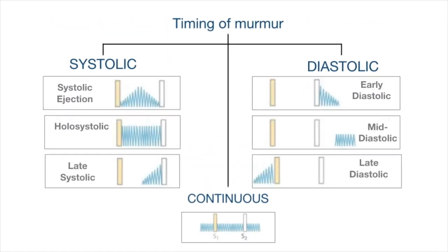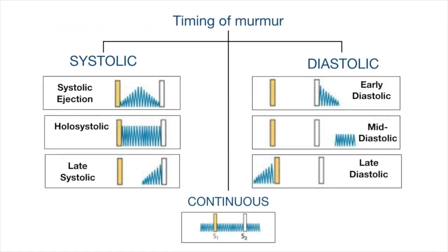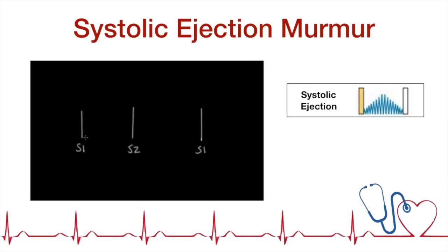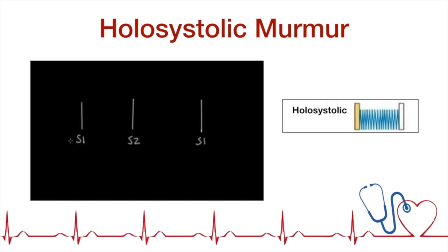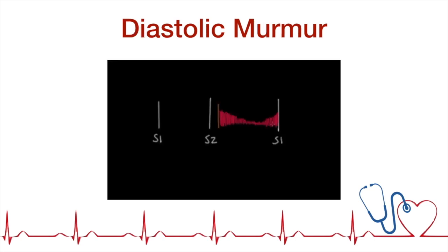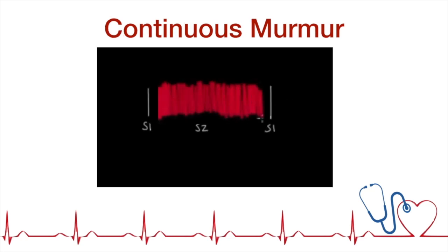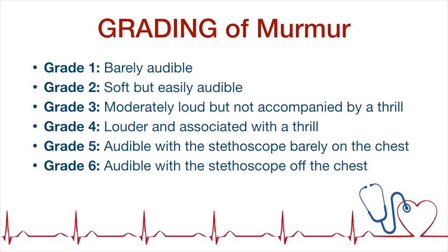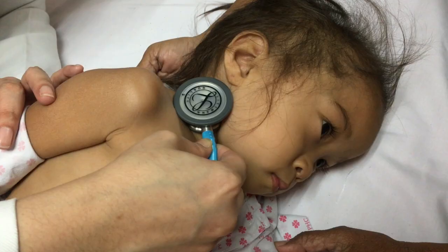Look for a murmur and note the timing — if systolic, diastolic, or continuous. Grade the intensity of the murmur and check for any radiation or transmission.